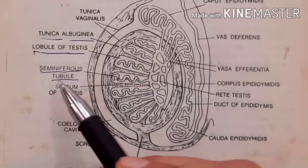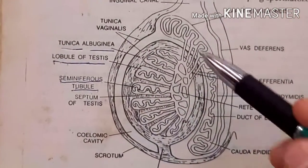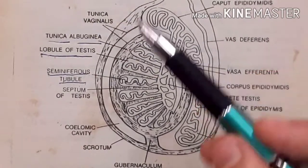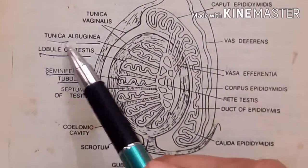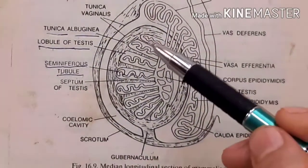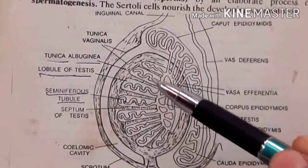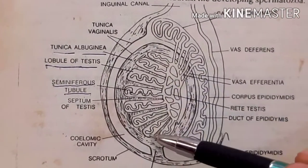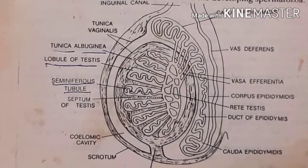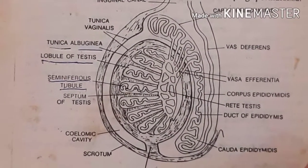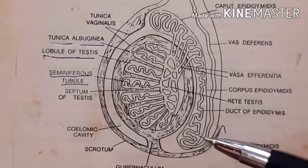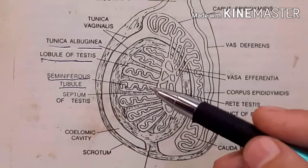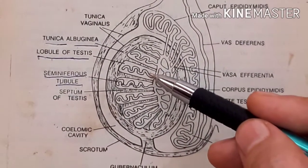So the structure of the testes is: tunica albuginea on the outside, 200 to 250 testicular lobules inside, and each lobule contains 1 to 3 seminiferous tubules where sperm are produced.